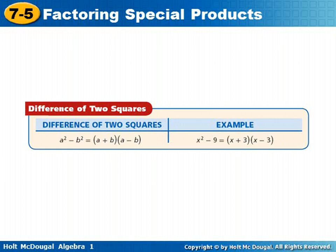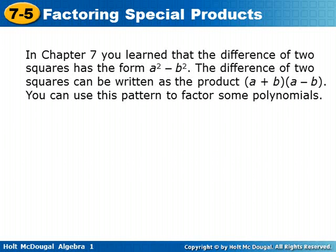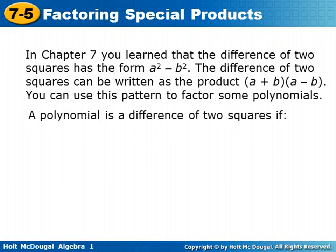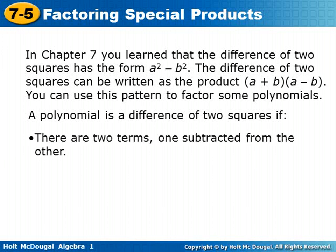The difference of two squares pattern was A squared minus B squared, and that factors into A plus B times A minus B. So for example, x squared minus 9 factors into x plus 3 times x minus 3. In chapter 7, you learned that the difference of squares has the form A squared minus B squared, which can be written as the product A plus B times A minus B. You can also use this pattern to factor some polynomials. A polynomial is a difference of two squares if there are two terms, one subtracted from the other, and both terms are perfect squares.